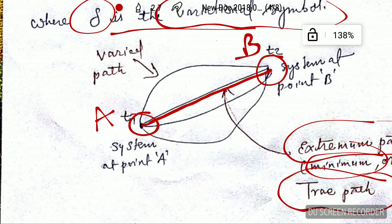There are of course other possible paths, but they are not the true path. The actual path which the system will follow is the extremum or minimum path, which is the straight line from A to B. This is Hamilton's principle for the correct path of a conservative holonomic system.